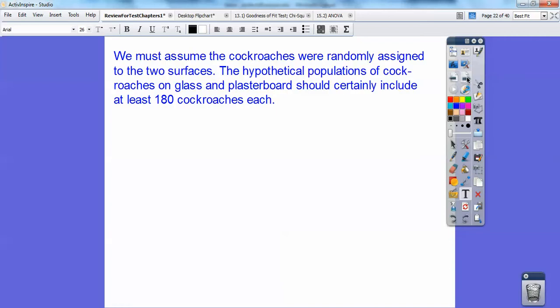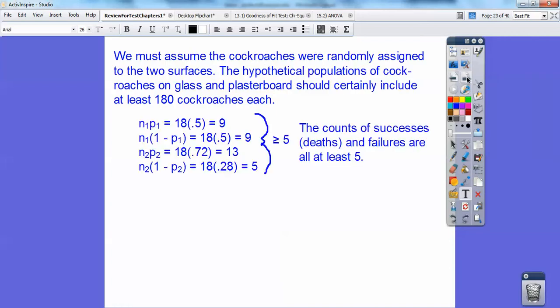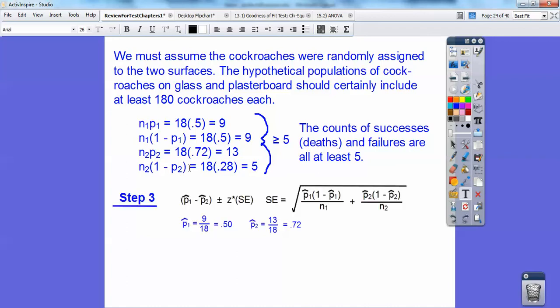So we must, we have to check to make sure that these values are all greater than or equal to 5. And they are, so the count of successes and failures are all at least 5. So here's my confidence interval right here. So P hat minus the other P hat plus or minus Z star times the standard error. And the standard error is this formula right here. And then here's my P hats right there. So you can plug them in.